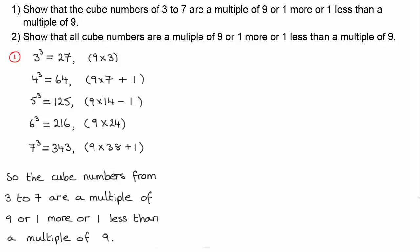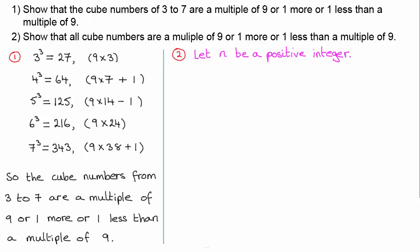We need to make a conclusion: the cube numbers from three to seven are a multiple of nine, or one more or one less than a multiple of nine. Don't forget to put that conclusion in. Now for number two — show that all cube numbers are a multiple of nine, or one more or one less than a multiple of nine — we have to do this a different way. We have to use proof by deduction. With this we're relying on an algebraic method, and I'm going to let n be a positive integer. Looking at the layout gives me an idea of how to tackle this, because I notice the multiples of nine directly are 3³, then 6³, and it would be 9³ next — so this is based on looking at (3n)³.